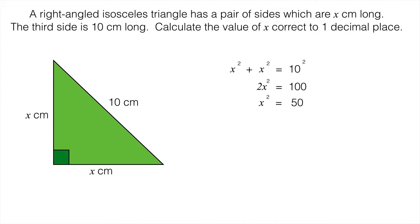That leaves me with x² = 50. At this stage I need to take the square root. So x is the square root of 50, and I'll need to pop that into a calculator to get an answer of x being 7.1 centimeters correct to one decimal place.